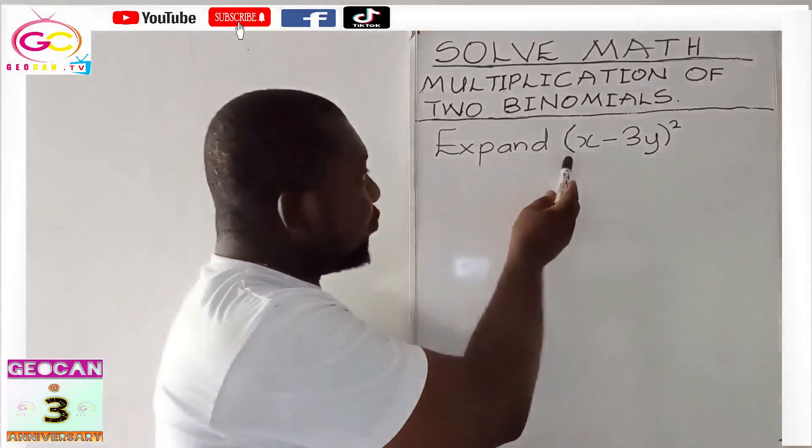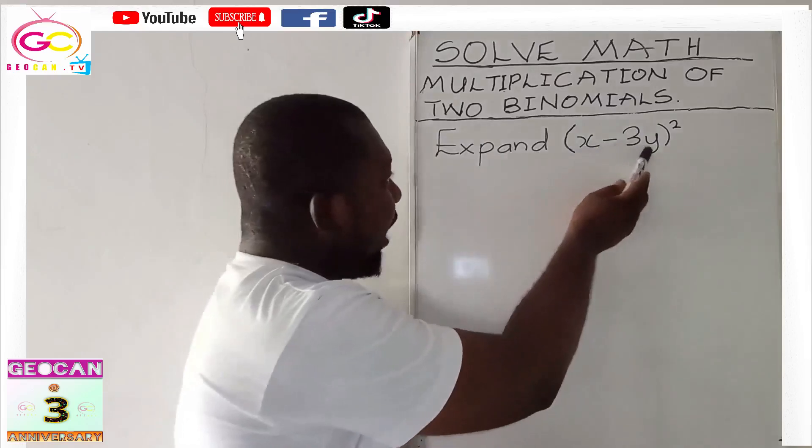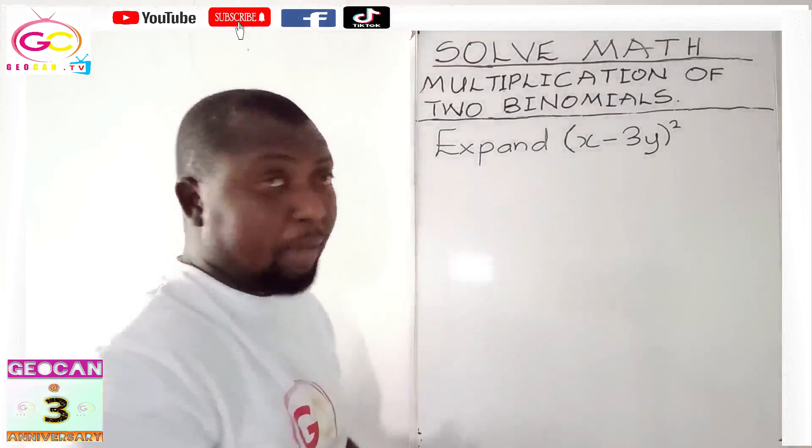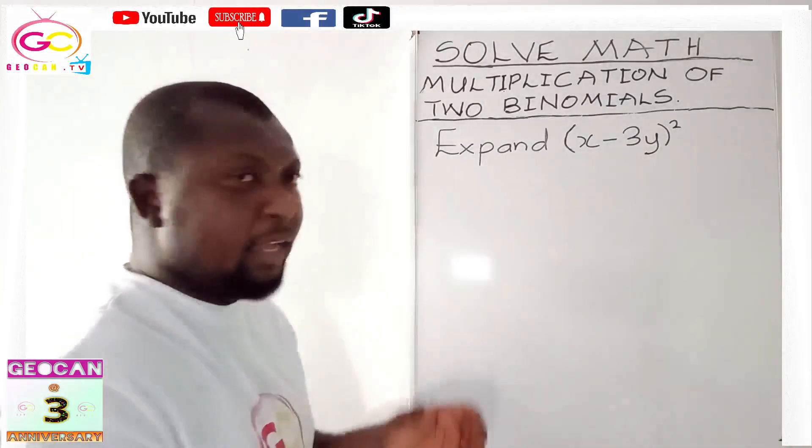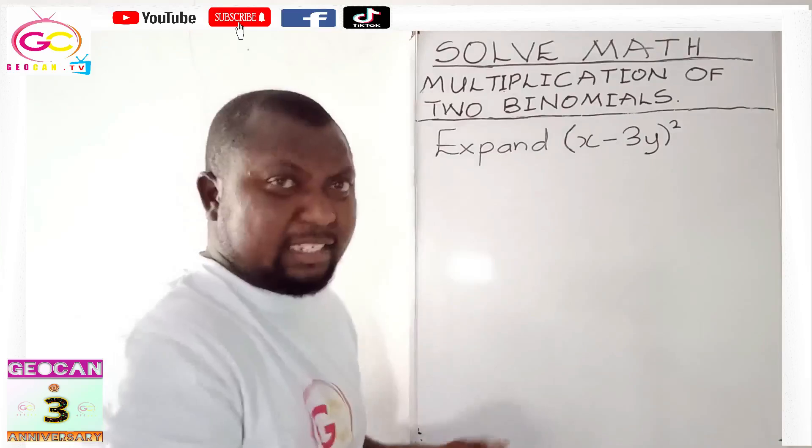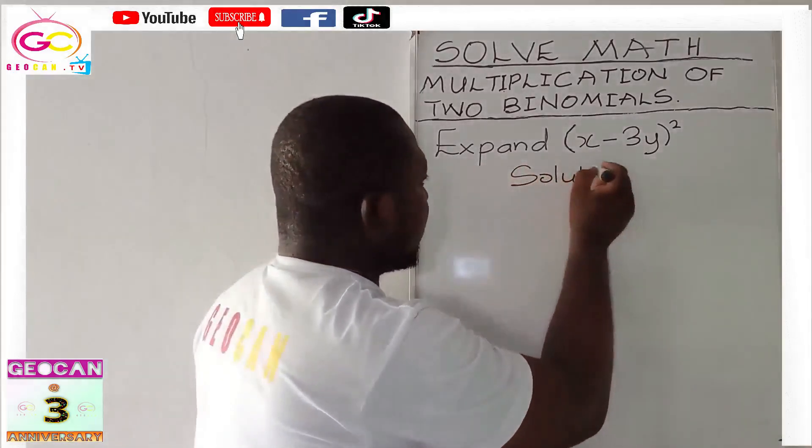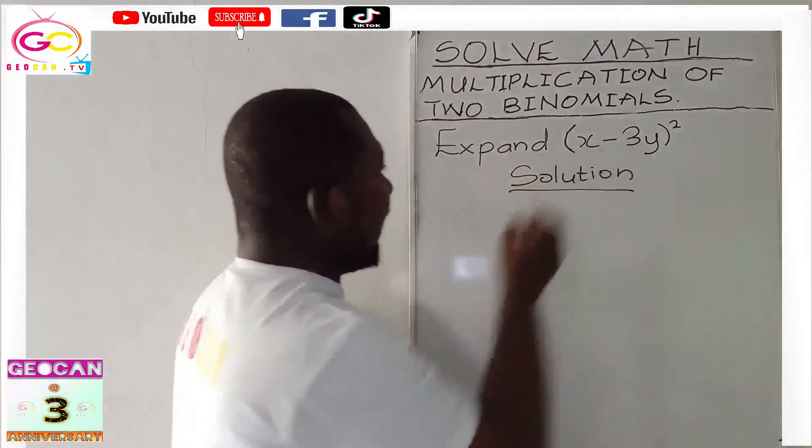Now, expand into bracket x minus 3y bracket close, raised to the power 2. This is simple. Let's have our solution. Our solution, meaning how we solve it, neatly written. Let's have the question.